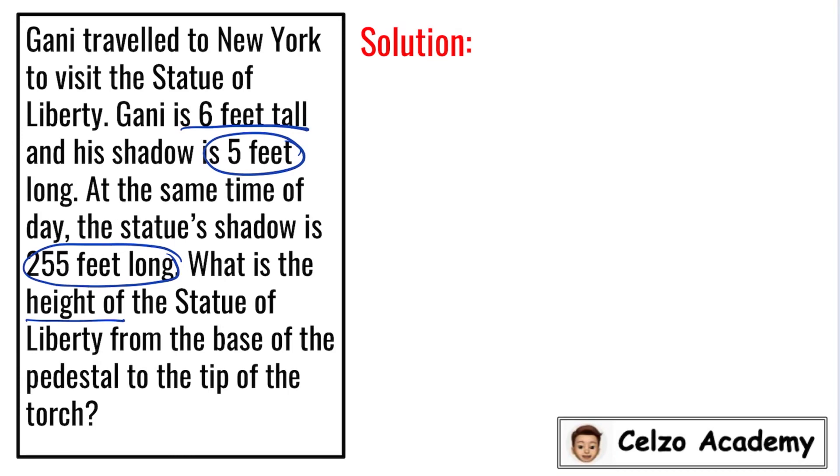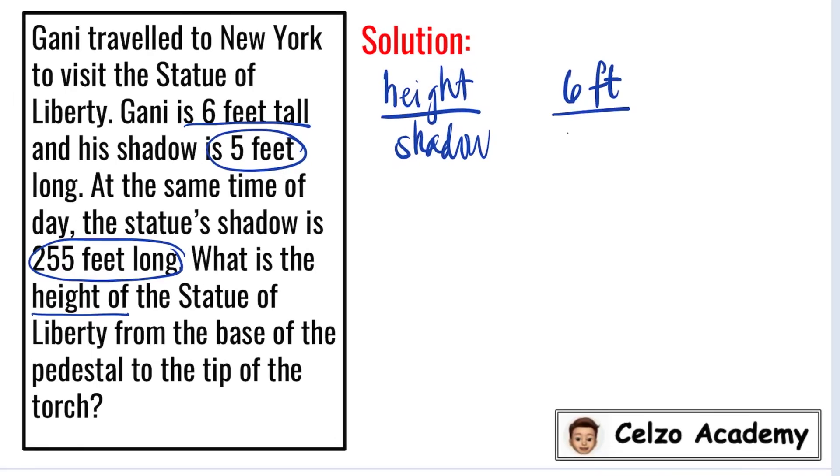In solving word problems like this, we need to set up first the equation using ratio and proportion. So this problem involves height and shadow, so we will use the fraction height over shadow. Let's start first with Gani. Gani is 6 feet tall and his shadow is 5 feet in length.